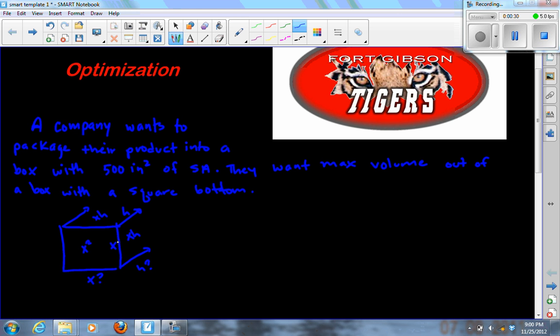Surface area is all the paintable parts of this box. That 500 is going to be a top and a bottom, so two x squared. There's one here and one there. And there's going to be four of these xh's all the way around the side. So there's a formula that relates to this problem.